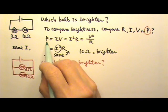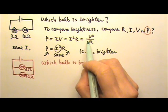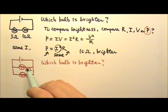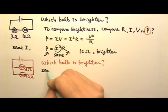Again, power equals to IV equals to I squared R equals to V squared over R. When the two bulbs are in parallel, they have the same voltage.